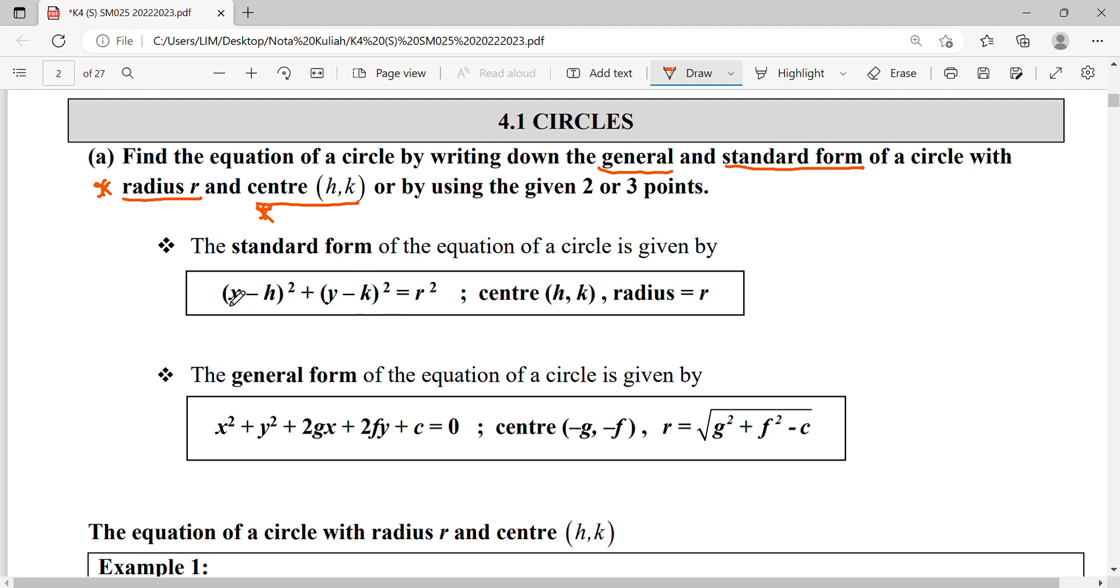For standard form, you will be using your center. Let's say your center is (h,k), means your x is equal to h, your coordinate y is equal to k. Then you put in bracket, so when you put in bracket it will be (x - h)² then (y - k)² equals to your radius square.